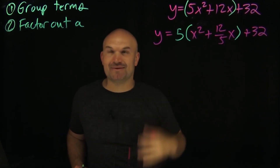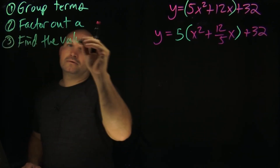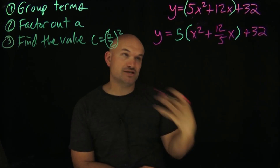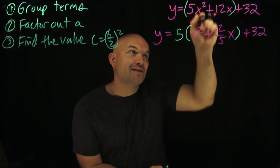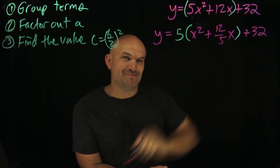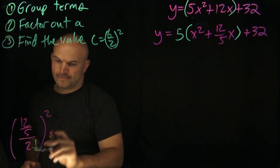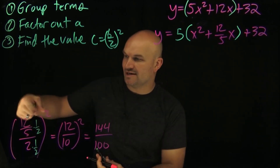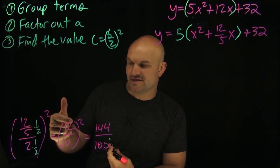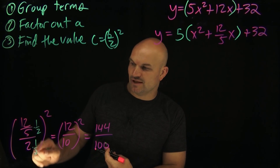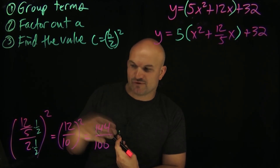Now here's where the fractions come in. The next step is to find the value c — the value that completes the square and creates our perfect square trinomial. Remember, c is found by taking b divided by 2, then squaring it. Don't go back to the original 12; you need to use the 12 over 5 inside the parentheses. I'll work it out here: a fraction divided by 2 is the same as multiplying by one half, so 12 over 5 times one half gives 12 over 10. Then squaring: 12 squared is 144, 10 squared is 100, giving us c = 144 over 100.